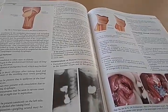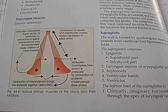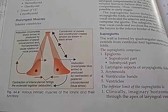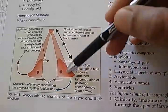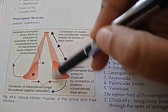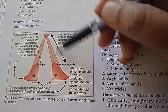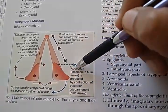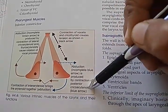What do you think, guys, compared to Dhingra and Mohan Bansal? How is this book? Here are various intrinsic muscles of the larynx and their functions. There is only one abductor, and that is the posterior cricoarytenoid.